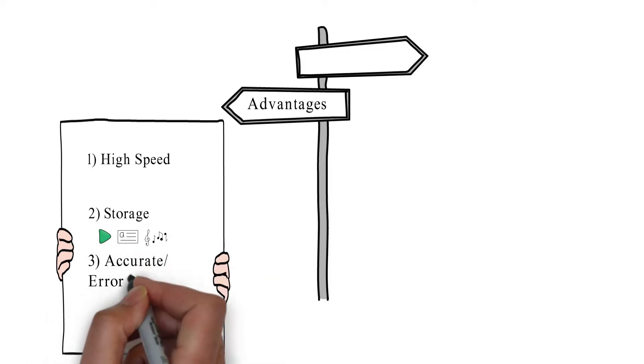Number three, accurate. Computers are very accurate. They give output error-free.